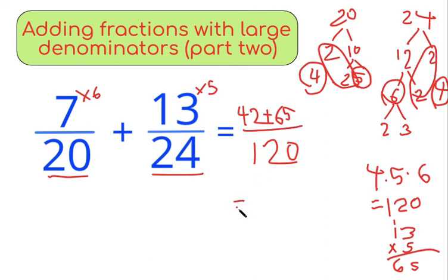Now all we have to do is add these numbers together to find our answer. 42 plus 65. So our final answer is 107 over 120.